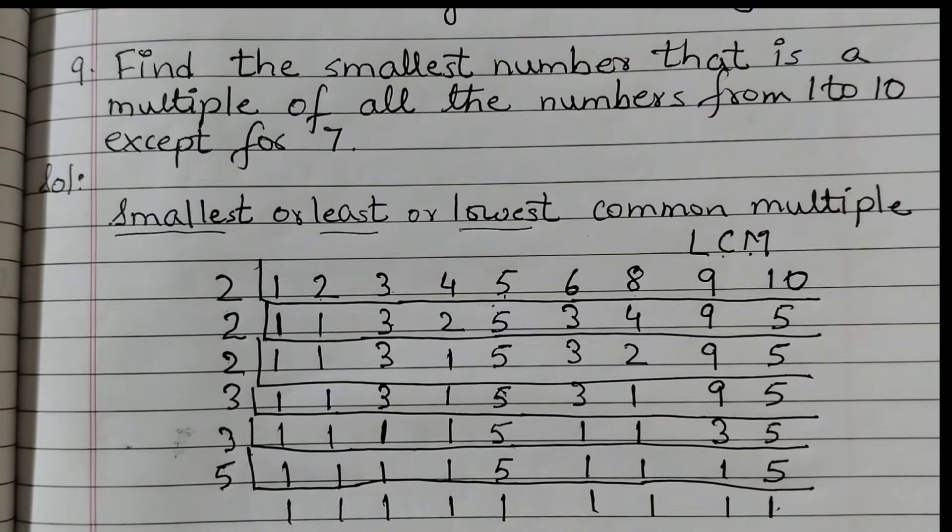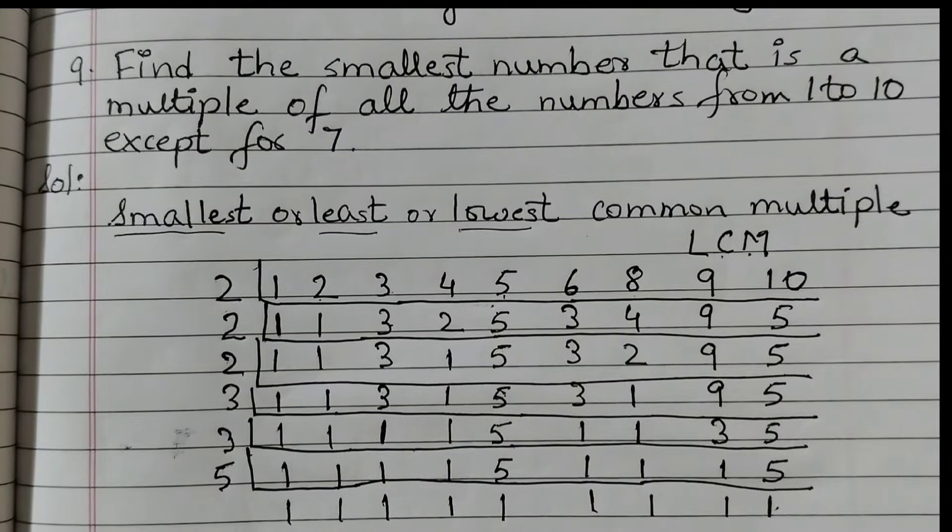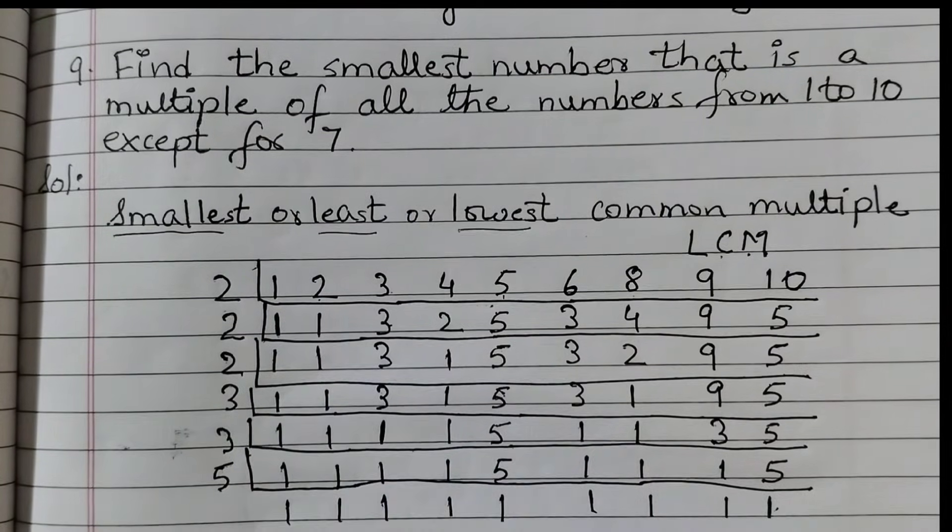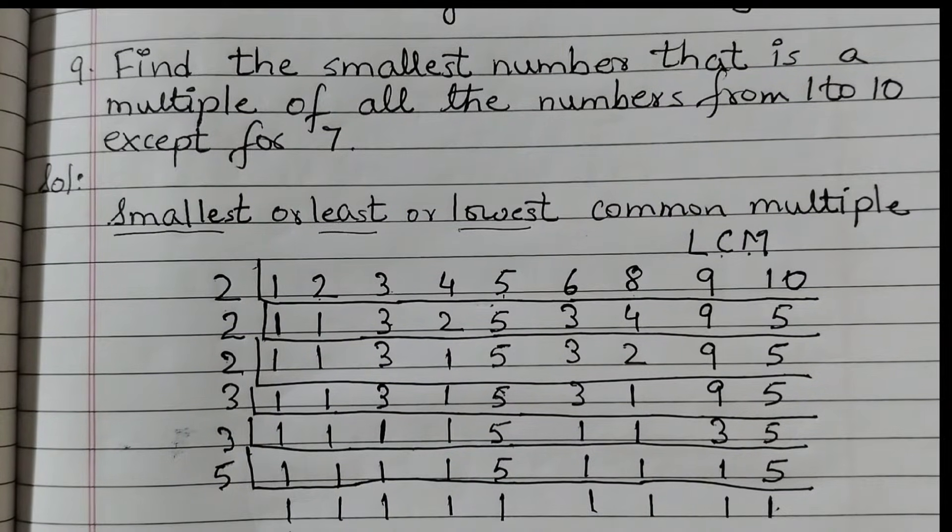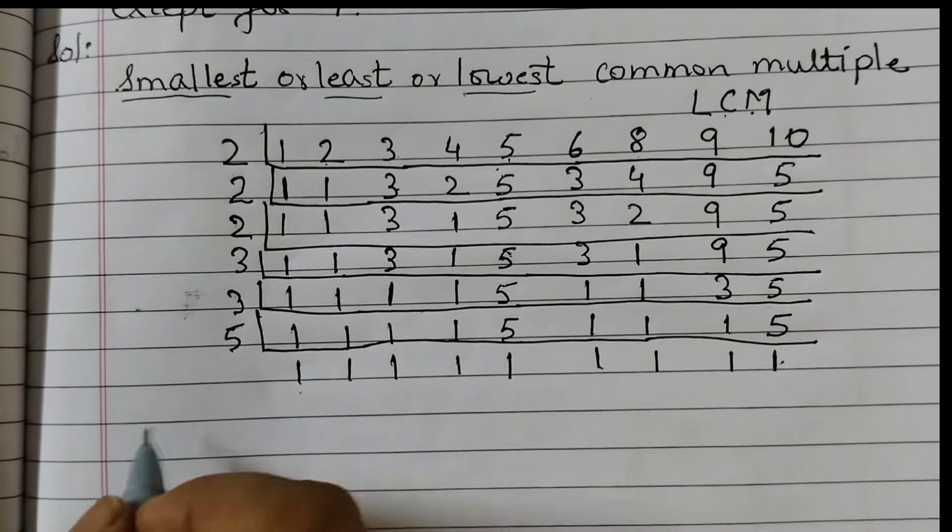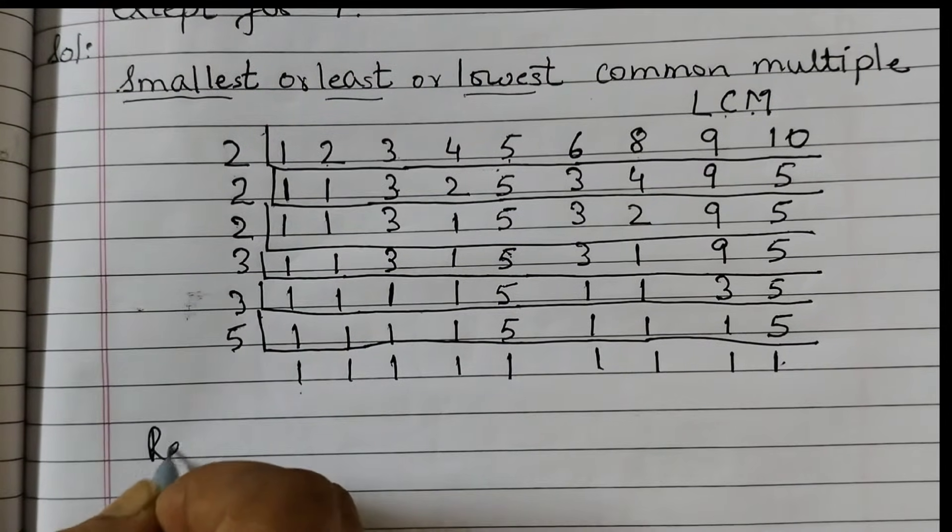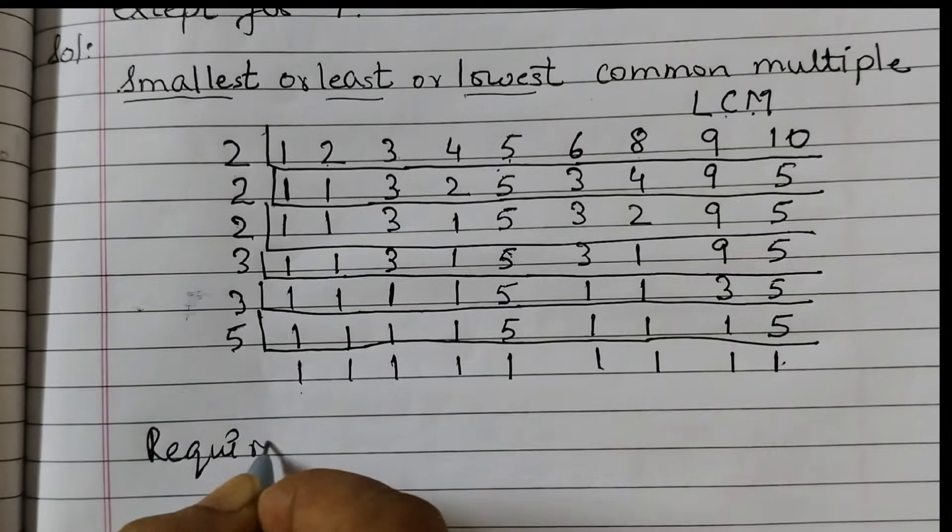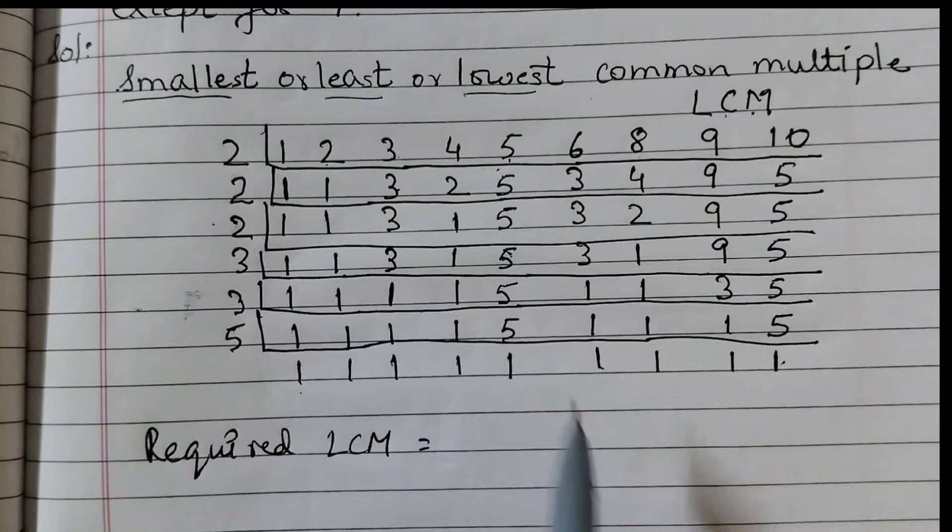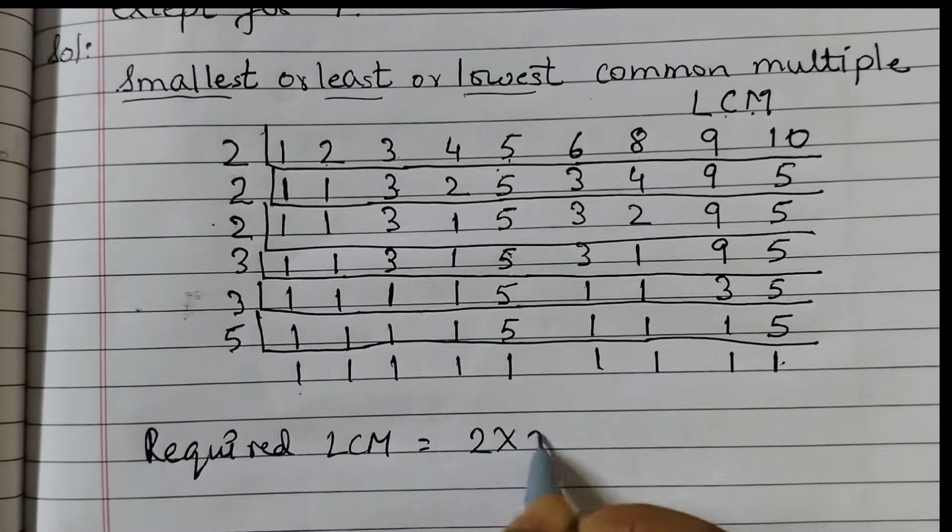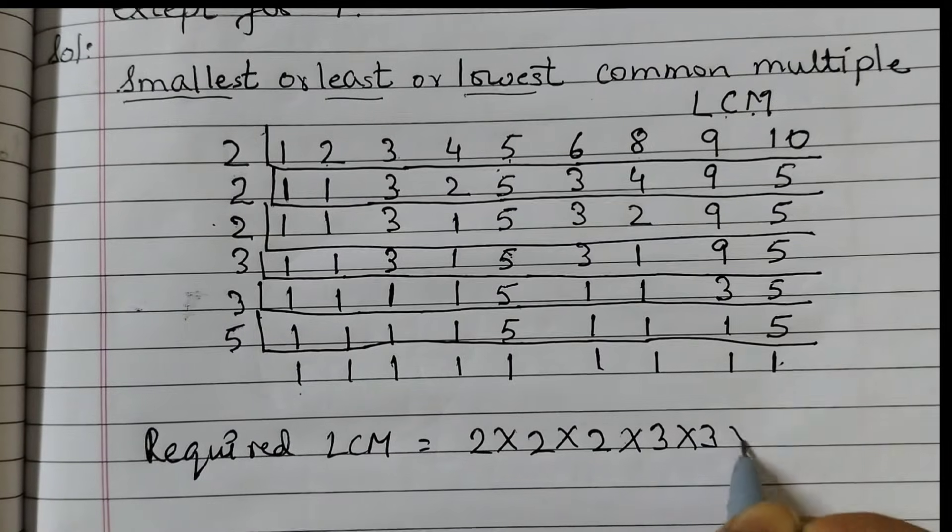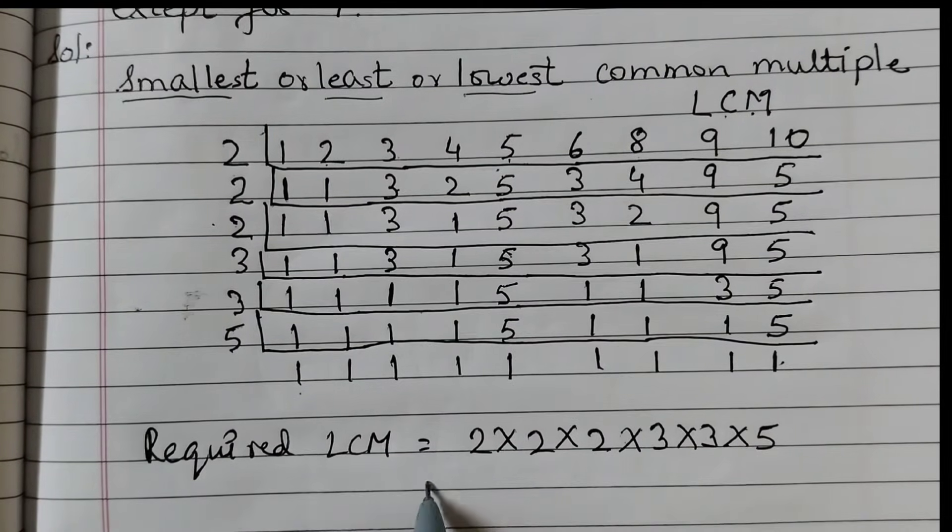So now all you need to do is multiply all these numbers. That is the LCM of 1 to 10 except 7. So we'll write LCM: the required LCM is equal to 2 into 2 into 2 into 3 into 3 into 5. We'll do the multiplication.